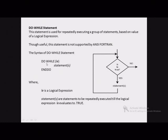The syntax of the do-while statement is: we write 'do' followed by 'while' followed by a logical expression or test expression. Here we write the statements that will be repeatedly executed till the expression evaluates to true. 'End do' marks the end of the do-while loop. Here, the logical expression is the condition and the statements are those to be repeatedly executed till the logical expression evaluates to true.